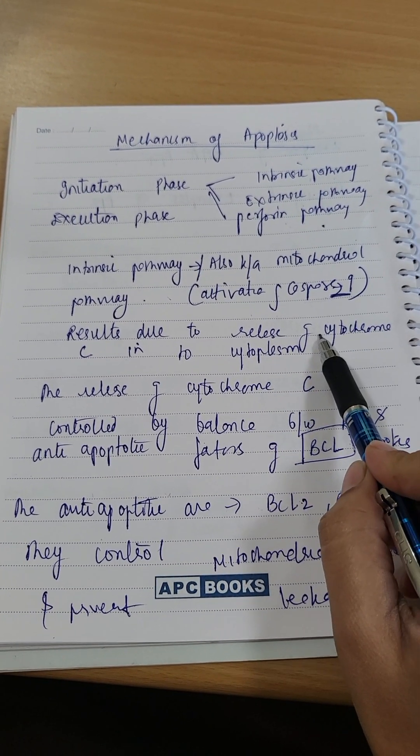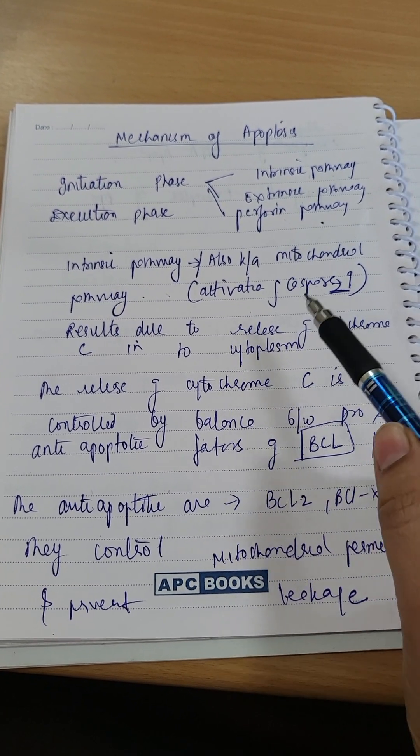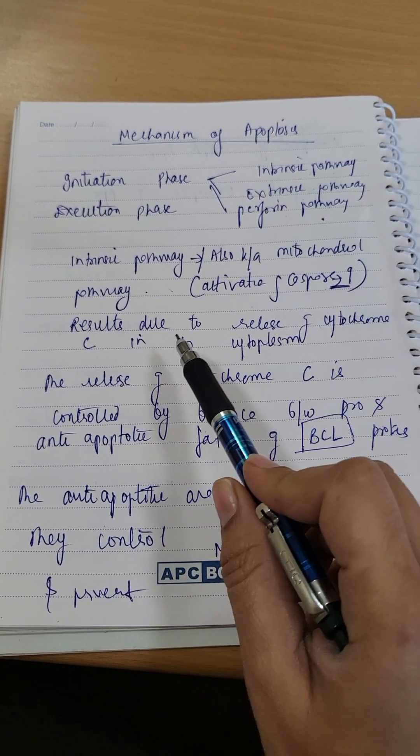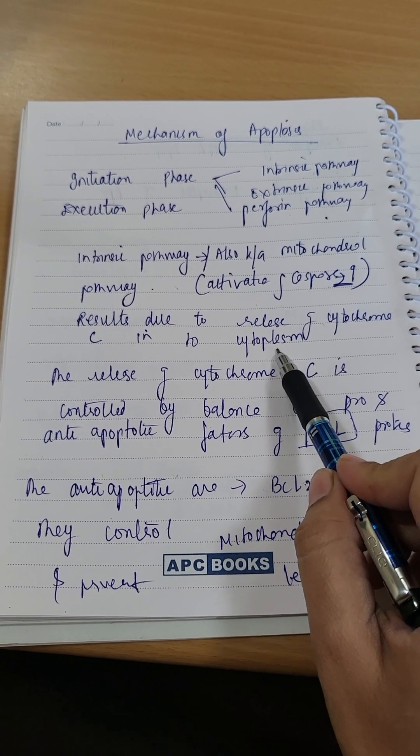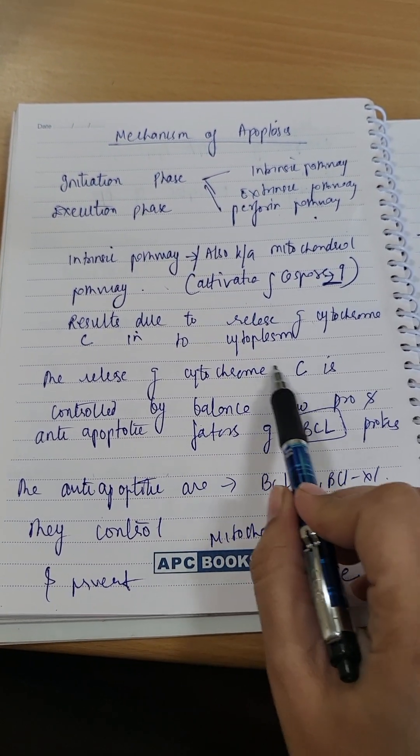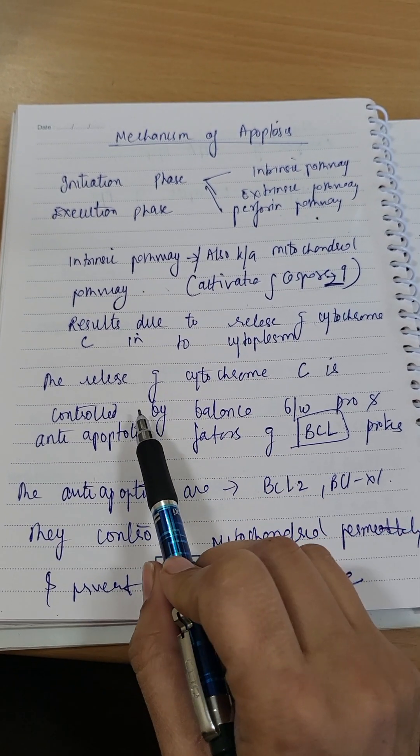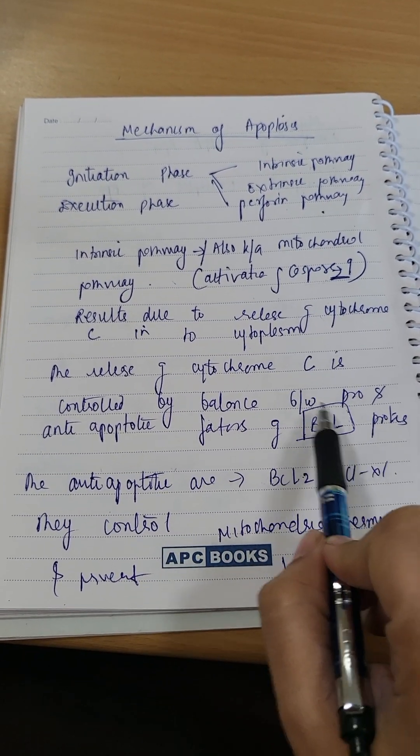Normally there is no leakage, but in apoptosis there is leakage of cytochrome C into the cytoplasm, which results in the process of apoptosis. The cytochrome C which is released controls the balance between pro-apoptotic and anti-apoptotic factors.